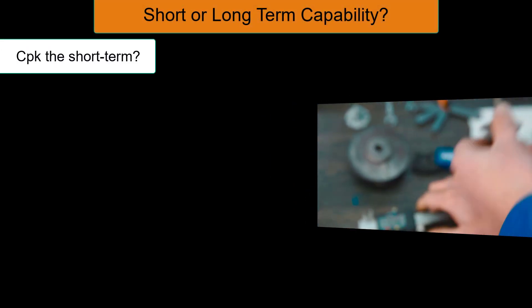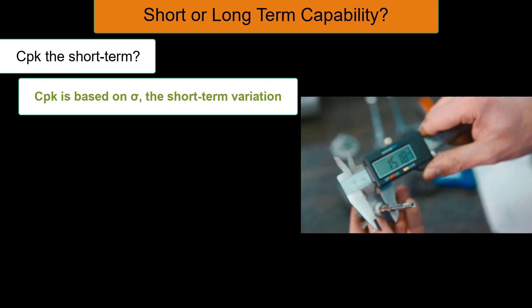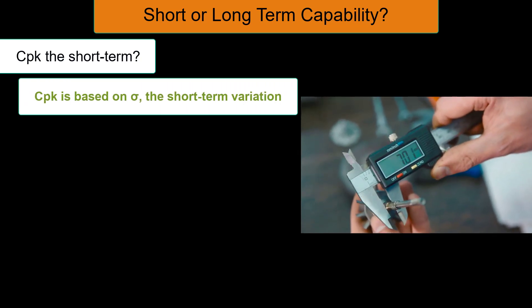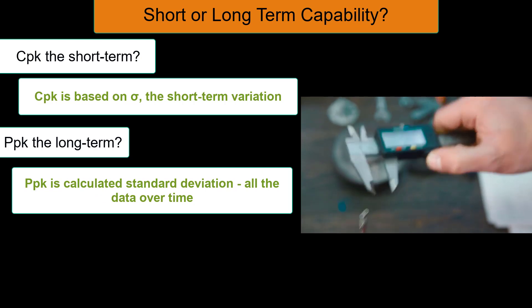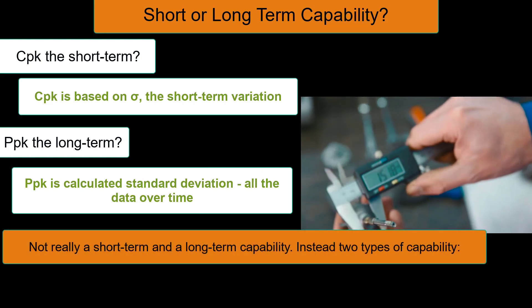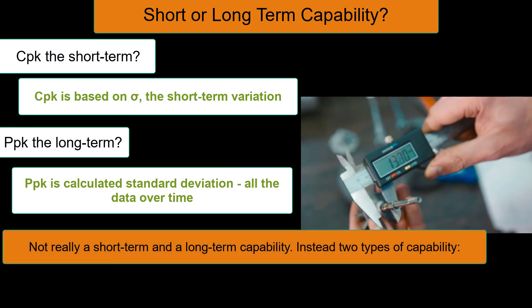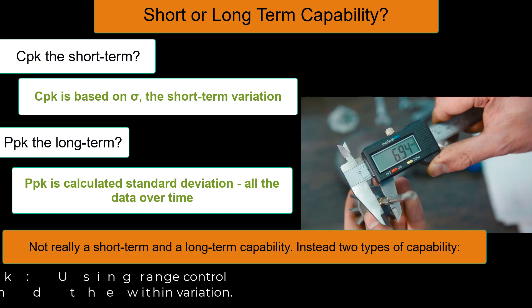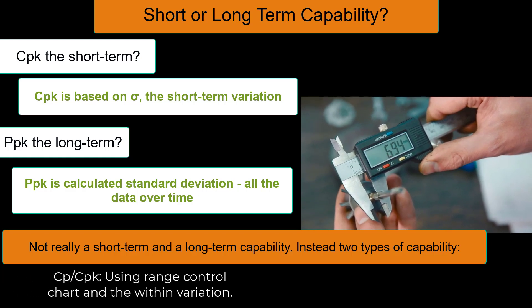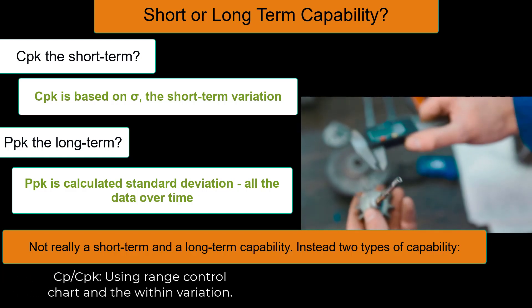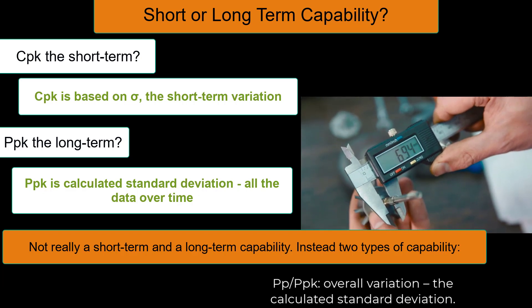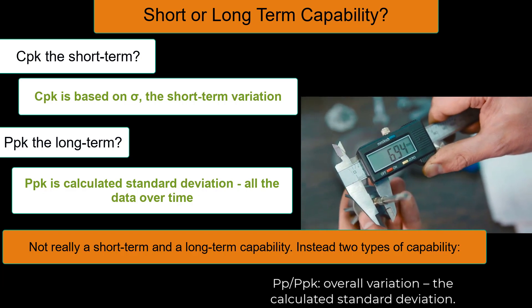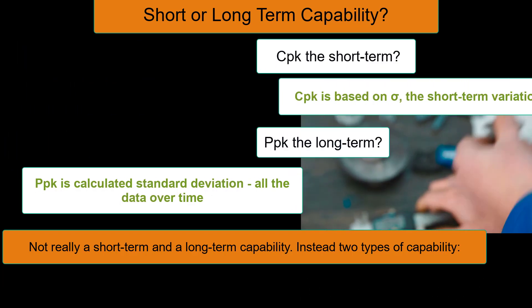Are these capabilities short-term or long-term? CPK is sometimes called short-term because it's based on sigma, the short-term variation in a range control chart. And PPK is sometimes called long-term because it uses the calculated standard deviation. But there's not really a short- or long-term capability distinction — there are simply two different types of capability depending on what you use to measure the variation.